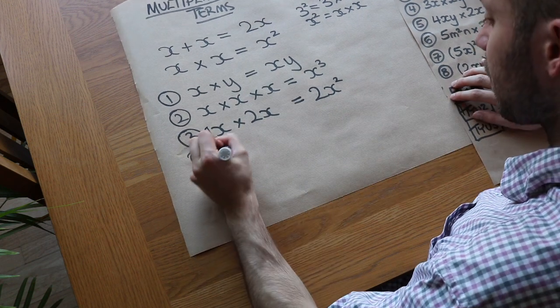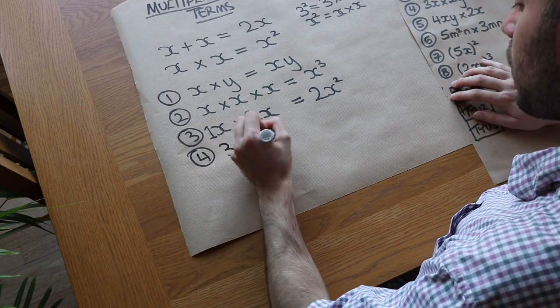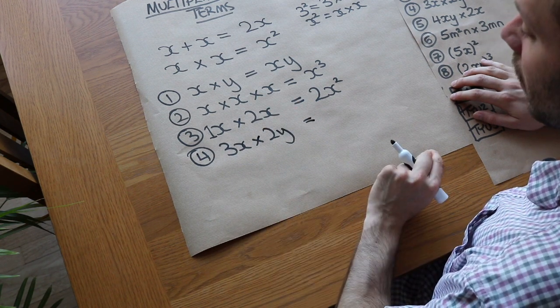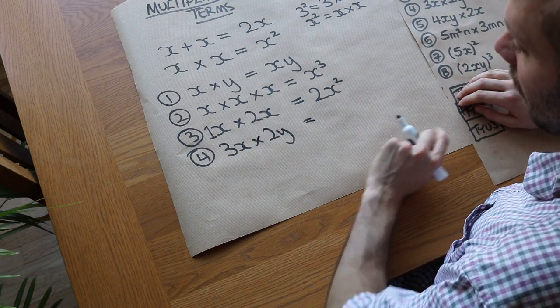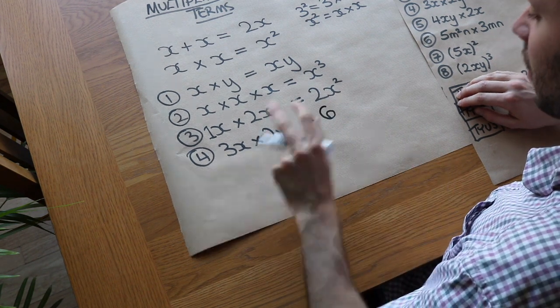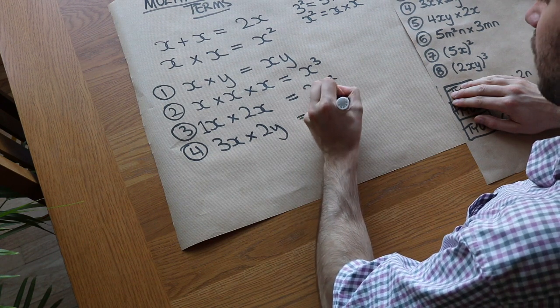Fourth one. We've got 3x times 2y. So this means 3 times x times 2 times y. So we might as well multiply the numbers together first. So we've got 3 times 2 is 6. And then we've got the x times the y, which is just xy.